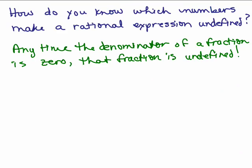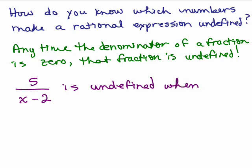So the question is: how do you know which numbers make a rational expression undefined? The answer is, any time the denominator of a fraction is 0, that fraction is undefined. That's the one time a fraction is undefined — if there is a 0 in the denominator. So let's say you were looking at 5 over x minus 2. This would be defined for any value of x, except when the denominator is 0. It's undefined when x minus 2, which is the denominator, equals 0.